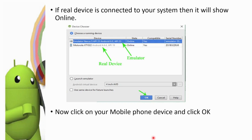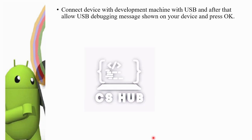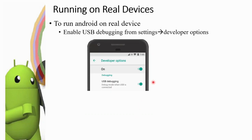To summarize the process for running on a real device: go to mobile Settings, enable Developer Options, enable USB Debugging, then tap Build Number seven times to activate Developer Options. USB Debugging is now connected.